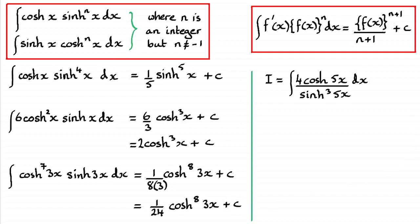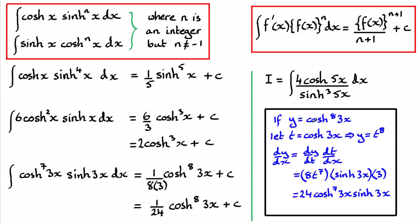Alternatively, starting with cosh⁸(3x) and using the chain rule where t = cosh(3x), y = t⁸: dy/dt = 8t⁷, and the differential of cosh(3x) is 3sinh(3x). This gives 8×3 = 24, so the derivative is 24cosh⁷(3x)·sinh(3x). Since we didn't have a 24 in the original integrand, we divide by 24, confirming the answer (1/24)cosh⁸(3x) + c.